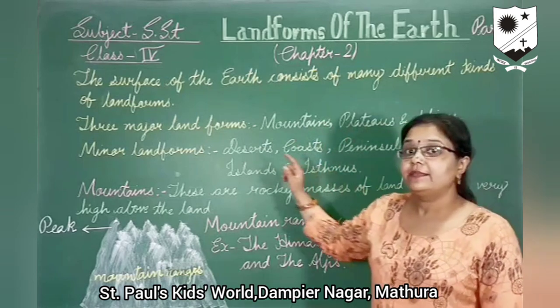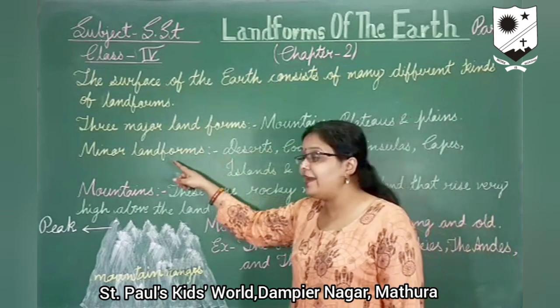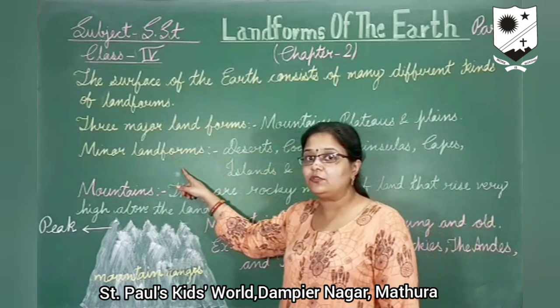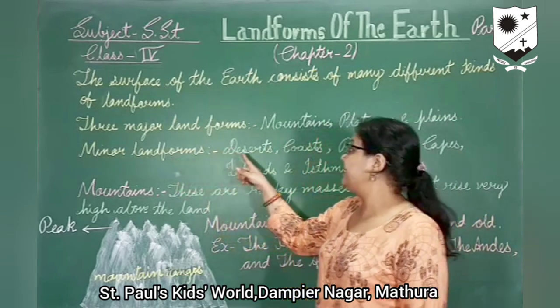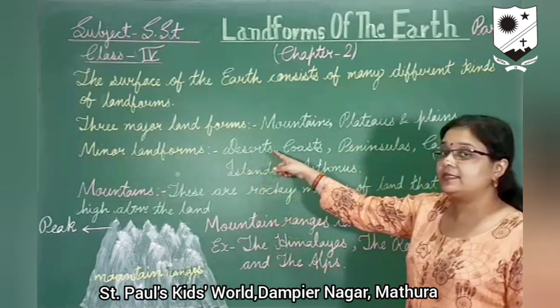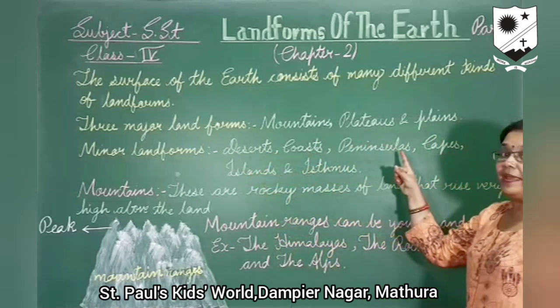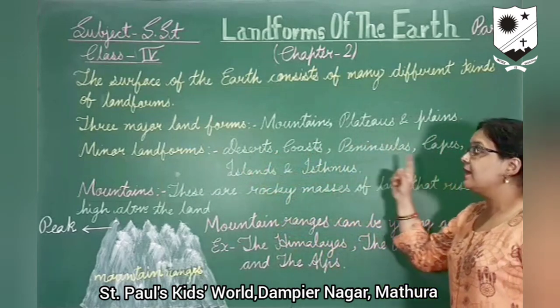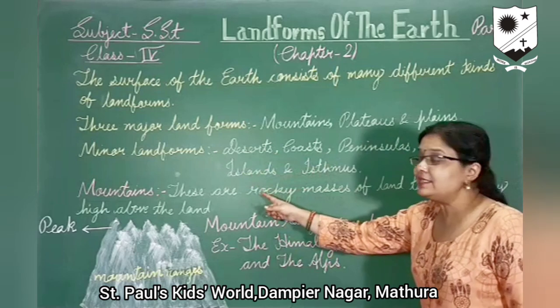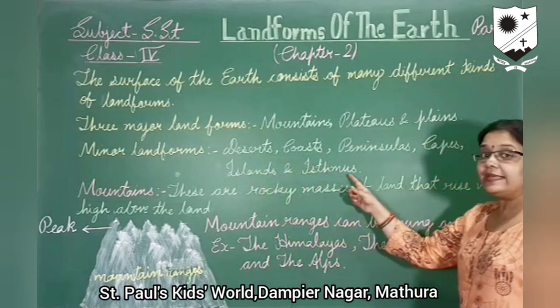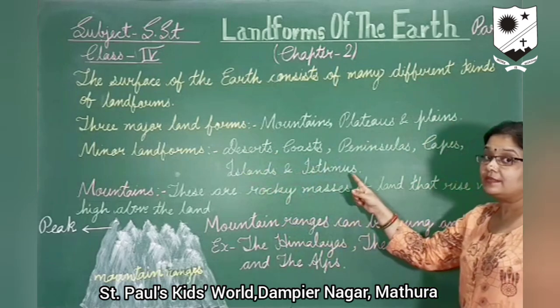Then there are minor landforms of the earth also. These are deserts, coasts, peninsulas, caves, islands, and isthmus.